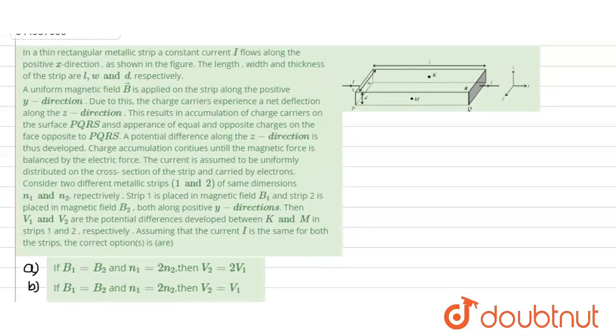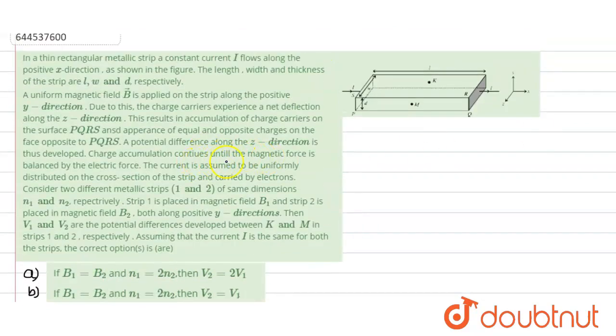Now if we just see the statement here it is saying that this accumulation will stop when magnetic force is balanced by the electric force. How can we write the value of the magnetic force? It is equals to Q into velocity which would be the drift velocity QVB. What is the electric force? It is charge times the electric field. How can we write this VD because Q and Q would be cancelled. So we need to place the value of VD.